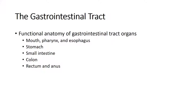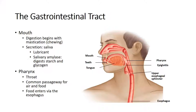Moving to functional anatomy: the mouth helps to masticate and chew food. There is secretion of saliva, which does two things — it starts the breakdown process through salivary amylase, which begins the digestion of starch in the mouth, and it also contains mucus to lubricate the food and make it a slippery, semi-liquid substance. So saliva is lubricating and beginning the breakdown process.